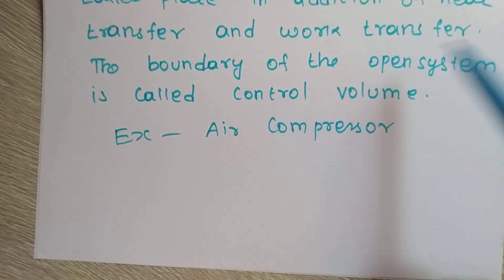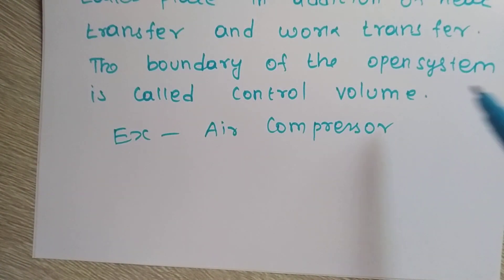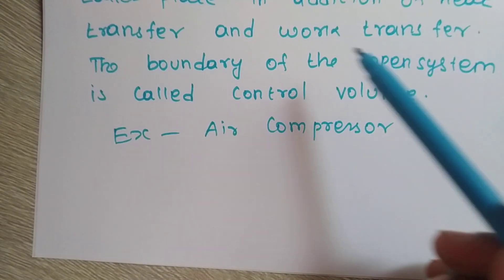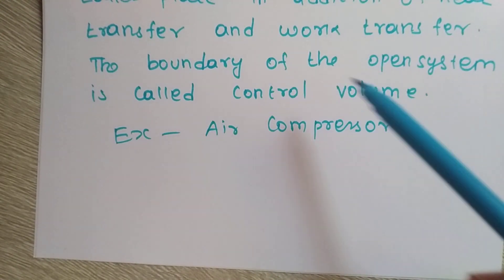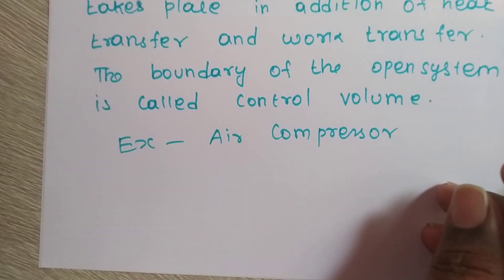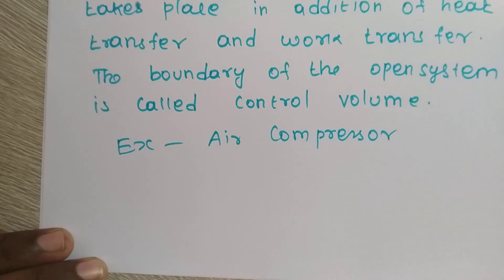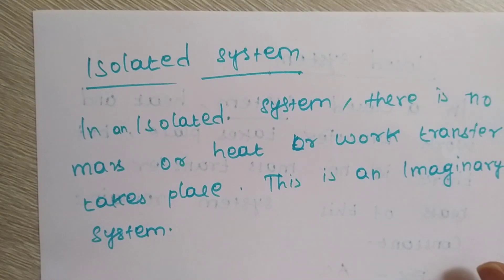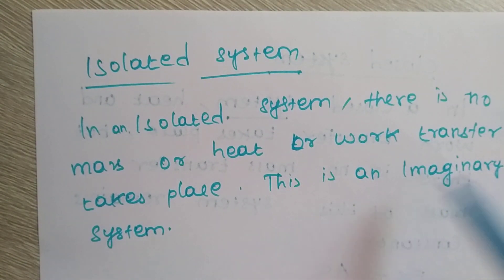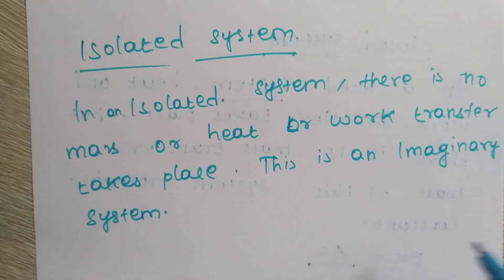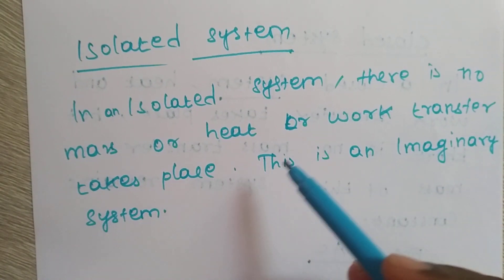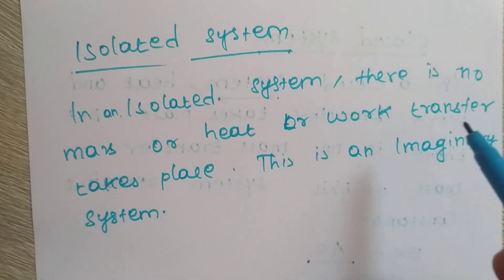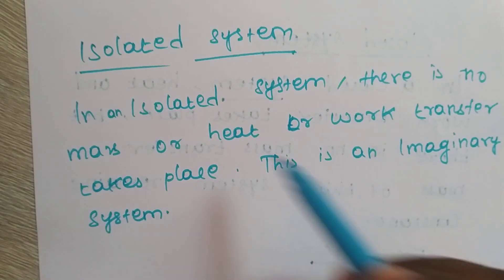The boundary of an open system is called the control volume. Next is the isolated system. In an isolated system, there is no mass, heat, or work transfer taking place. This is an imaginary system.